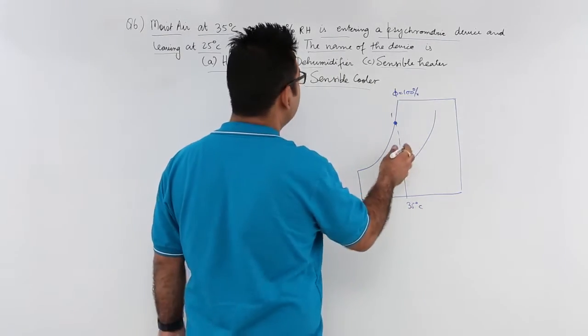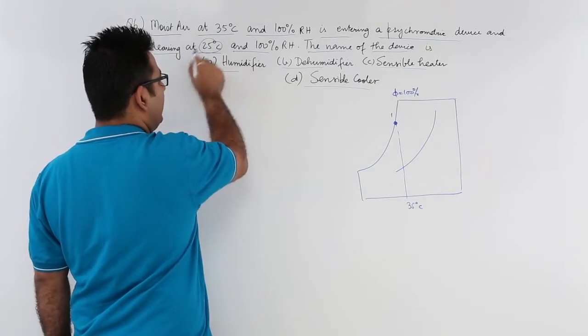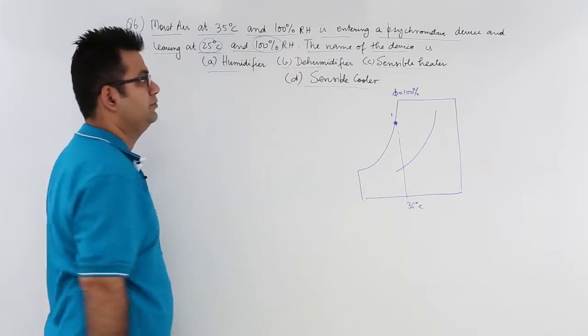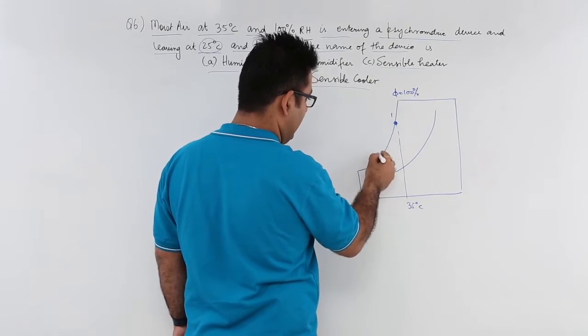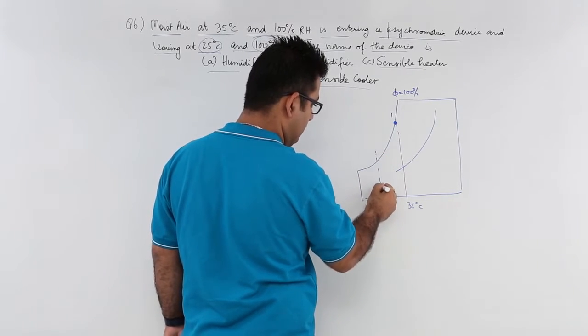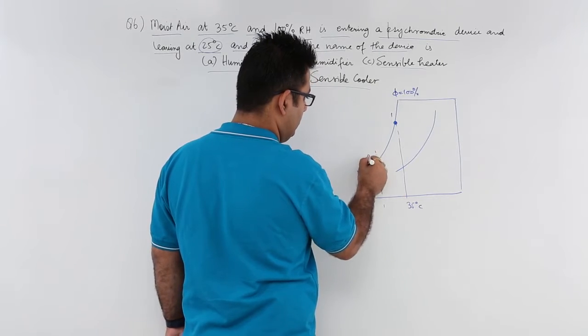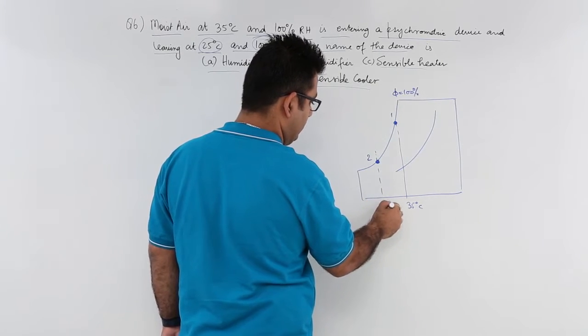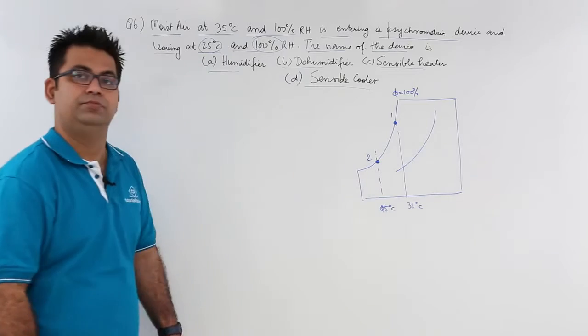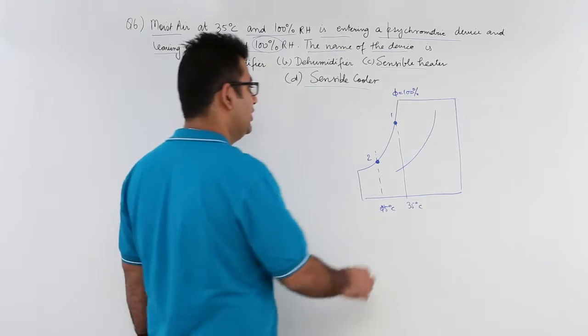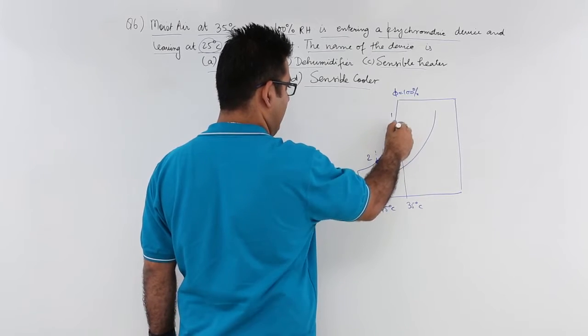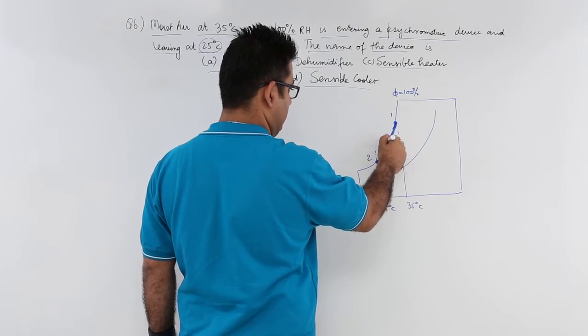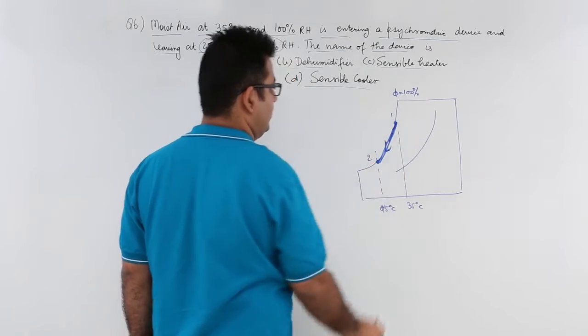Then after this it leaves at 25 degree Celsius but in the same RH. So you have the same RH and your temperature has gone down. This means this is the process which is taking place.